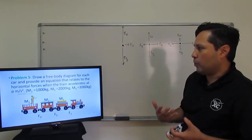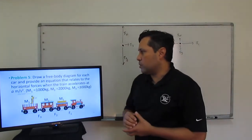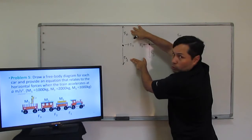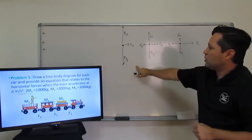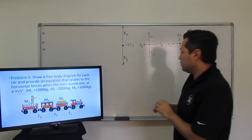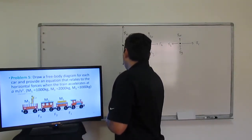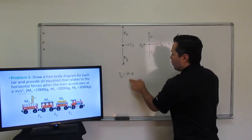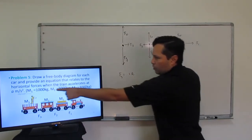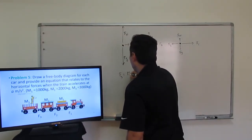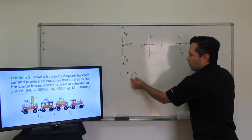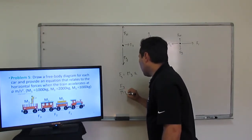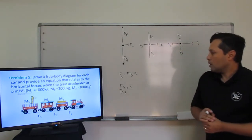They also want an equation relating the horizontal forces. Gravity and normal force cancel each other out. Starting with cart three: F = ma, so force three equals M times acceleration. Dividing by M on both sides gives the formula for acceleration of the third cart. For cart two, there are two forces — force two to the right, force three opposing, so: F2 − F3 = M2 × a. Dividing by mass gives the acceleration of our second cart.